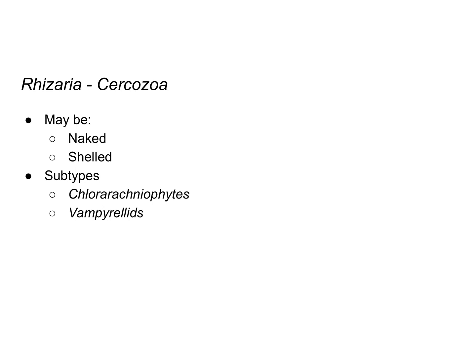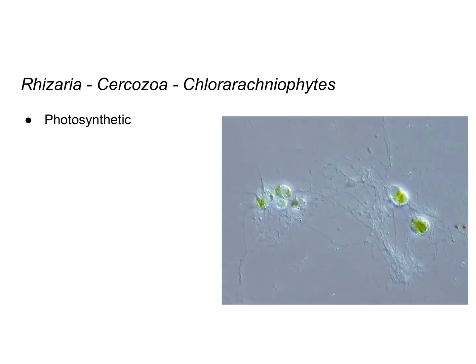The cercozoa Rhizaria can be naked or shelled — some of them have that test and others don't. We're going to take a closer look at two subtypes of cercozoa: the chlorarachneophytes and the vampyrellids. The chlorarachneophytes are photosynthetic, and you can see that green pigment inside that allows them to do photosynthesis.